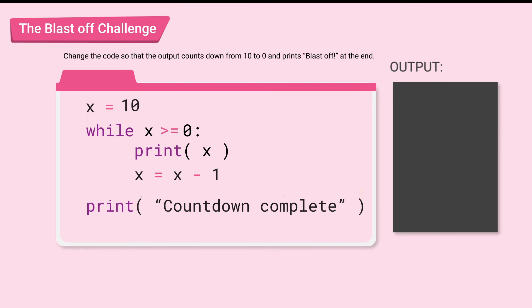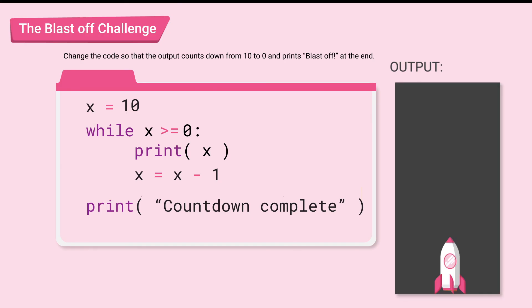Replace the greater than sign to greater or equal to. This way, when x is equal to 0, it meets the condition and prints 0. We get to exit the while loop when x is minus 1. Then the last thing to change is the last print statement. Here, let's put blast off.